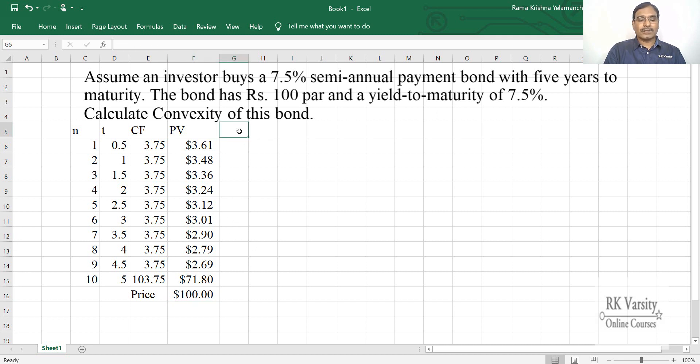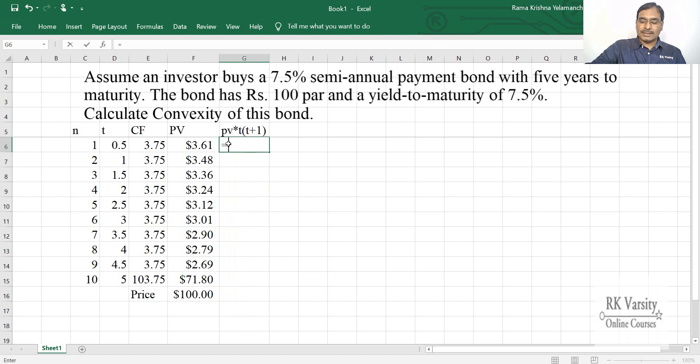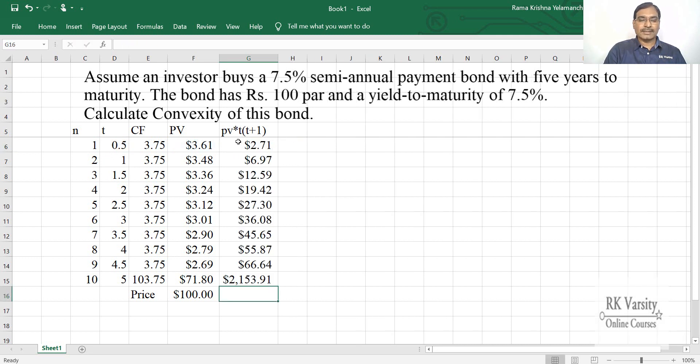Now to get a convexity, we need to multiply this present value of cash flows times T into T plus 1. So this equals to your present value of a cash flow. So this times, now T is 0.5 here, so 0.5, this times another 0.5 plus 1. So here are the present value of cash flows times T squared plus T.